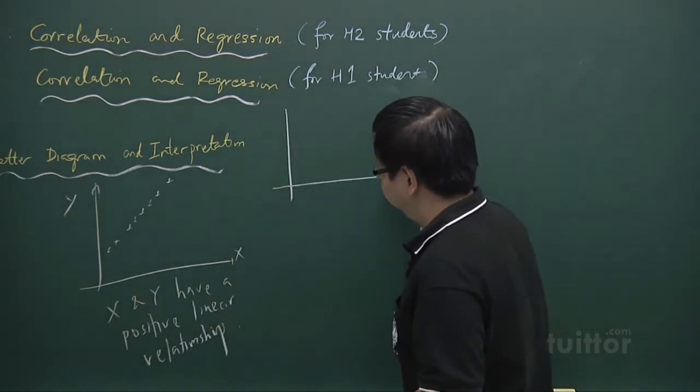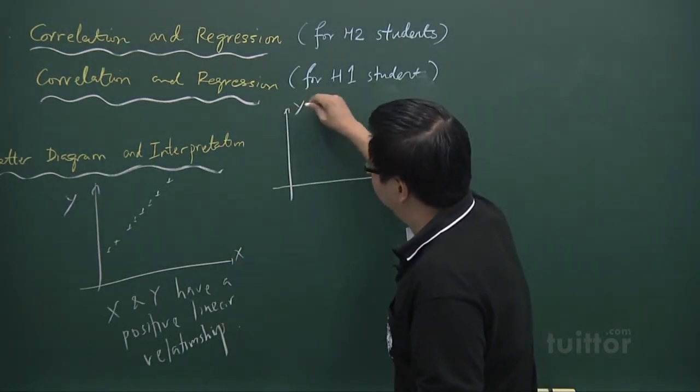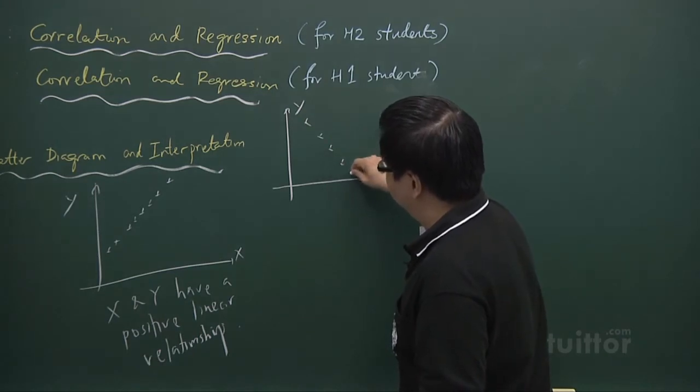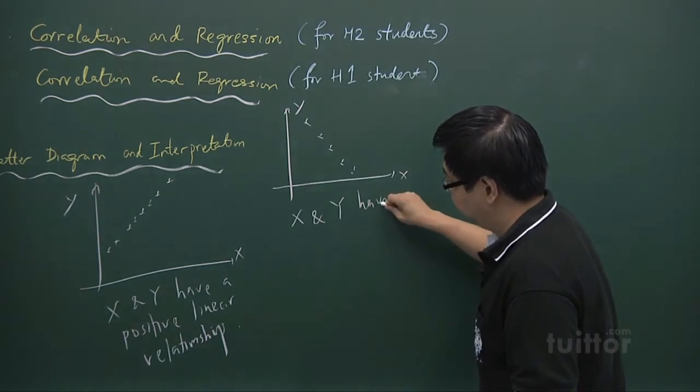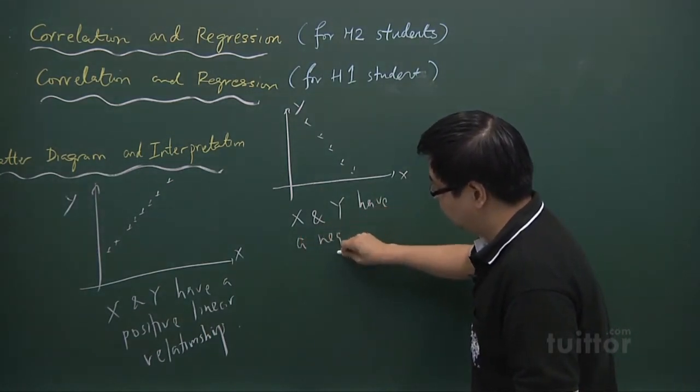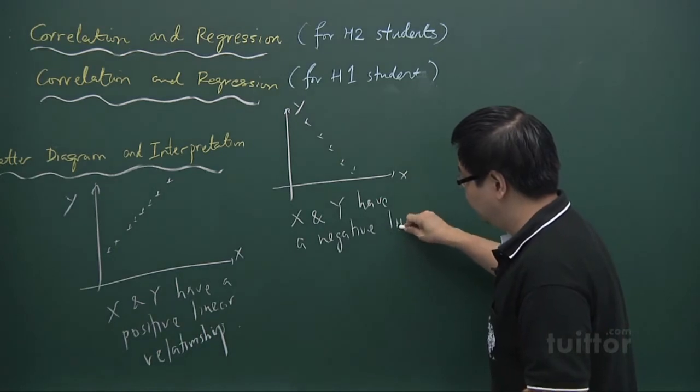Second example, I will say that x and y have a negative linear relationship.